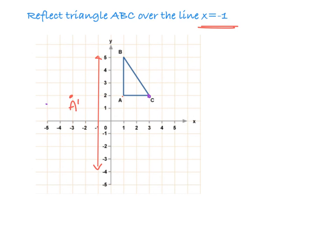You can see 1, 2, 3, 4. So we're going to go 4 to the left. 1, 2, 3, 4. That's our C prime. And then B was 2 units to the right, so we need to go 2 units to the left. And we'll connect all of our points to finish our triangle.